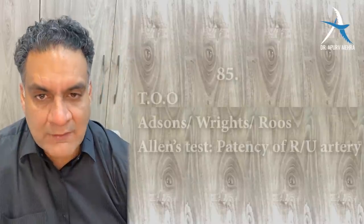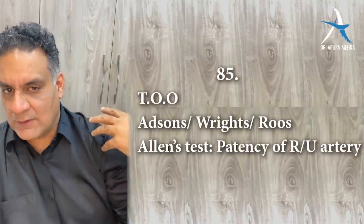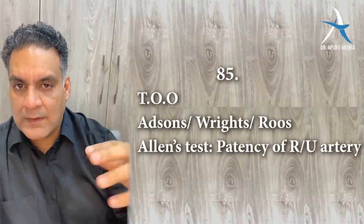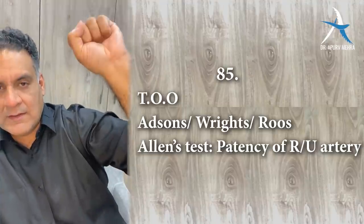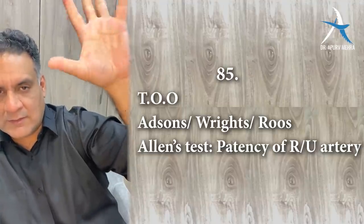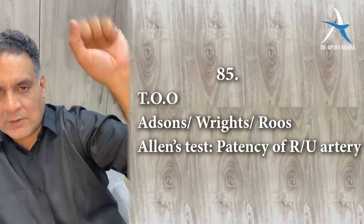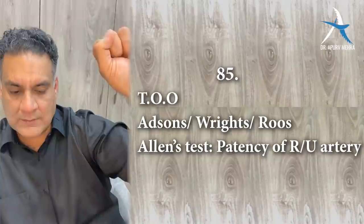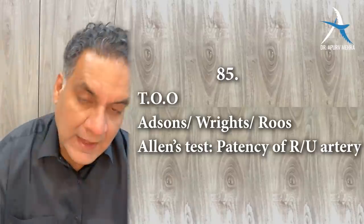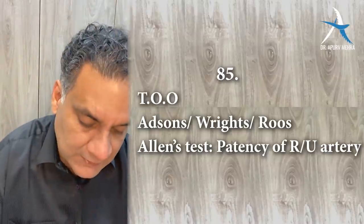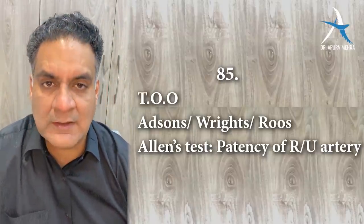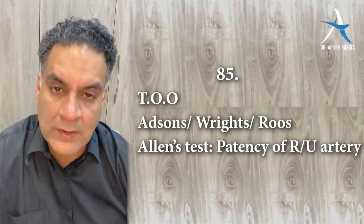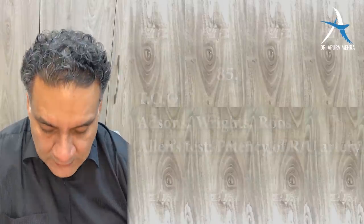Point number eighty-five: thoracic outlet syndrome — tests include the ROOS test (shown in NEET 2019), Adson's and Wright's test. Allen's test is for patency of the ulnar or radial artery.